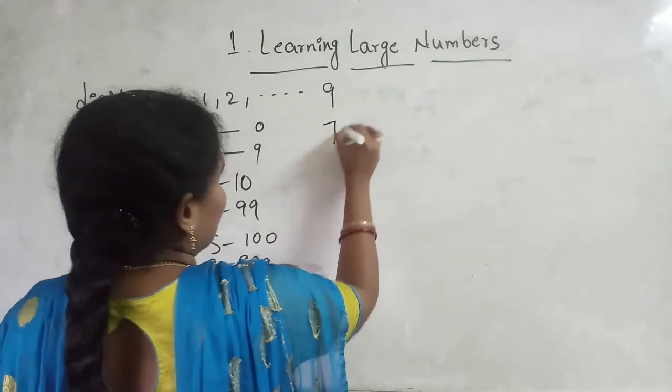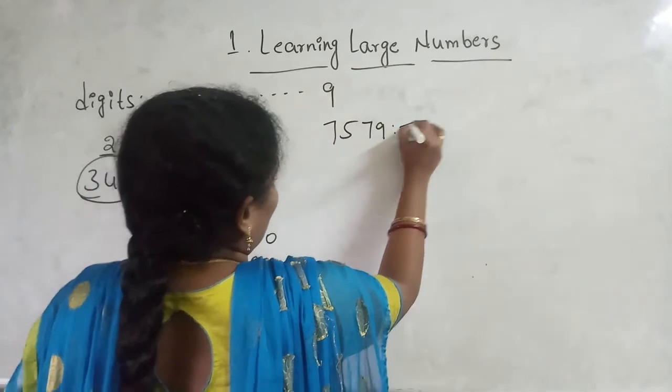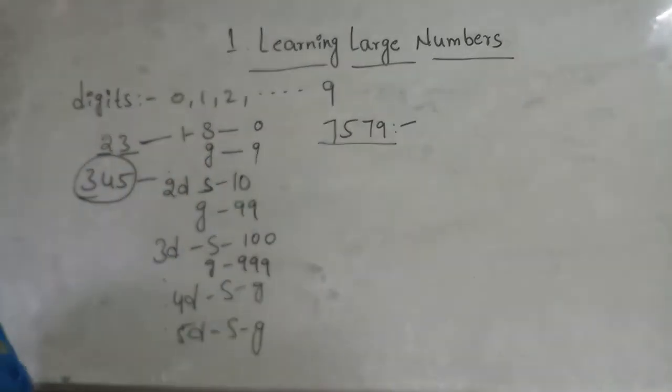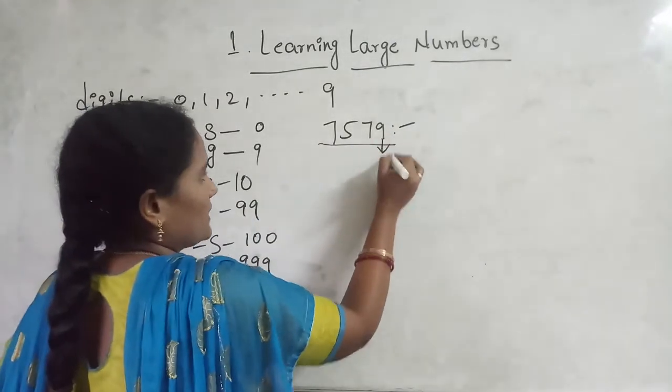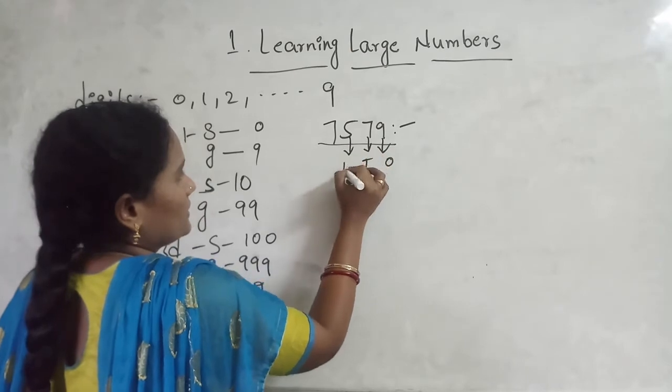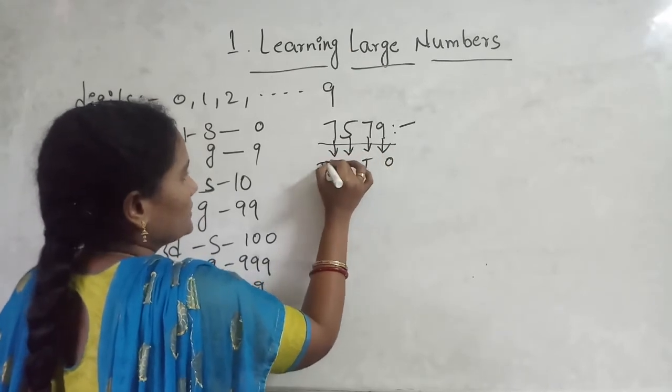Now, I given some number. How to read this number and how to write number name? First of all, we all check it. Place values. Ones, tens, hundred and thousand.